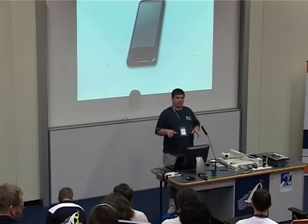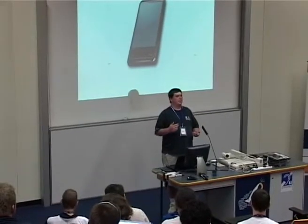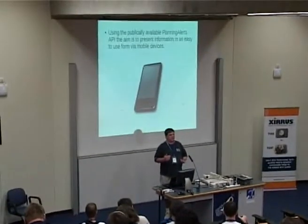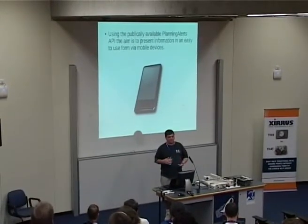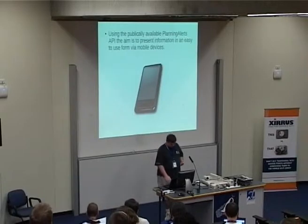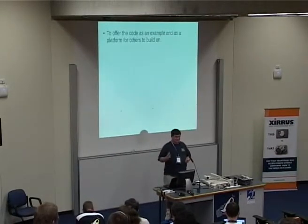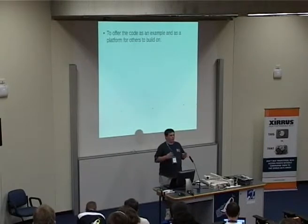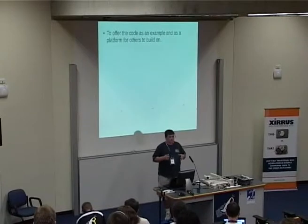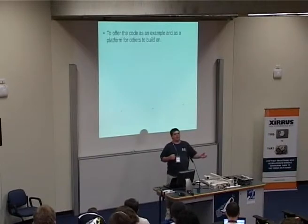Using the publicly available Planning Alerts API, the idea is to produce a tool that will allow people to easily keep track of what's going on, save results and all the rest of it, without having to go back to their website and continuously check up. The other idea is to offer the code as an example of what not to do or what to do, and as a platform for other people to build on. The code is open source so you can take it and apply it to other applications.